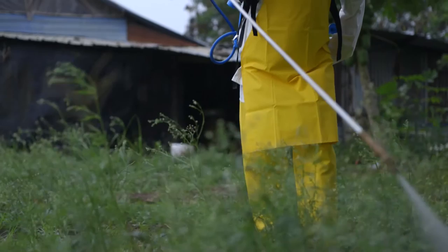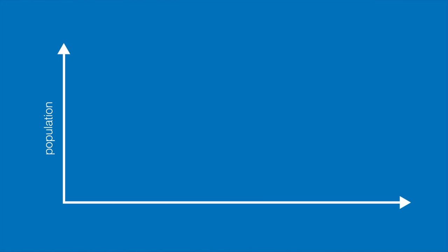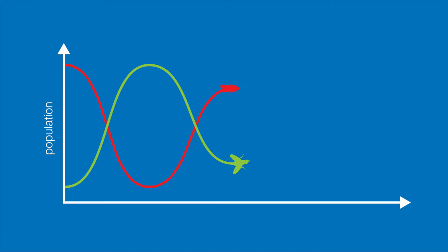The whole thing about biological control is about balance. How do you balance? You don't want the pest to be too much, neither do you want the natural enemies to be too much. Because if there are too many natural enemies, they have nothing to feed on. So you have to find a balance — this is basically an ecological balance that you have to set.